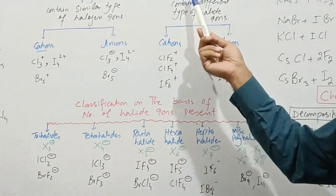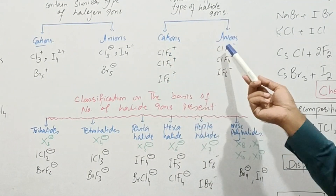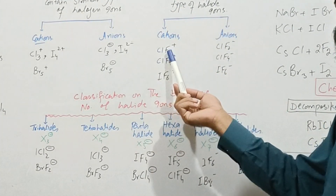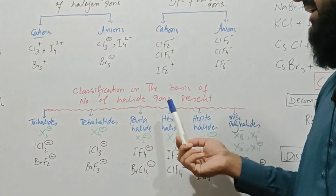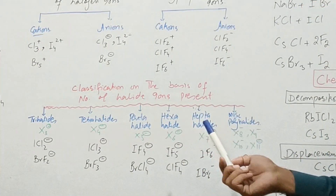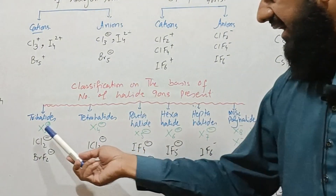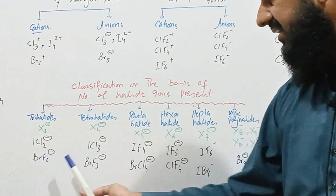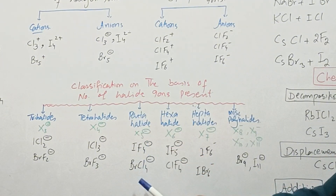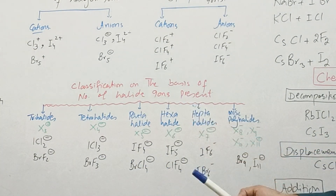Similarly, heteropolyhalides are further classified into heteropolyhalocations and heteropolyhaloanions, with a few examples given. In these cations, different types of halogen atoms are present. On the basis of the number of halogen atoms, polyhalide ions can further be classified into trihalide, tetra, penta, hexa, hepta, and miscellaneous polyhalides. The trihalide general representation is X3⁻.